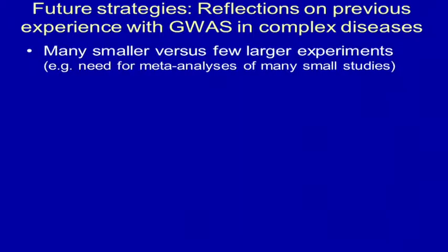There are these different pulls in different directions between the many smaller studies versus a few larger experiments. One of the lessons from GWAS was that we probably need to be moving towards a few larger experiments, as was illustrated by the need for the meta-analysis of the smaller GWAS studies. So I think there's very clear agreement on that.